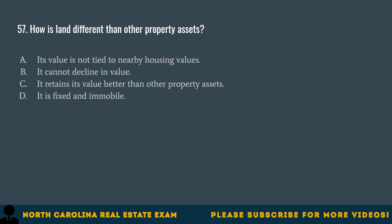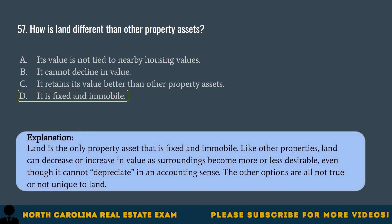Question 57. How is land different than other property assets? A. Its value is not tied to nearby housing values. B. It cannot decline in value. C. It retains its value better than other property assets. D. It is fixed and immobile. The correct answer is D. It is fixed and immobile. Land is the only property asset that is fixed and immobile. Like other properties, land can decrease or increase in value as surroundings become more or less desirable. Even though it cannot depreciate in an accounting sense, the other options are all not true or not unique to land.